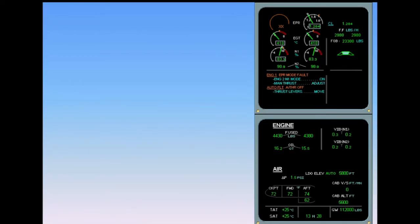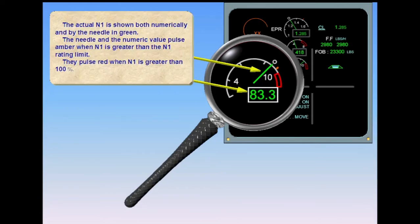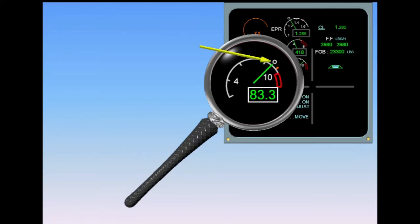The actual N1 is shown both numerically and by the needle in green. The needle and the numeric value pulse amber when N1 is greater than the N1 rating limit, and pulse red when N1 is greater than 100%. The white circle indicates the thrust lever position and is not displayed in unrated mode. The amber index indicates the full forward position of the thrust lever, MAX N1, which is also not displayed in unrated mode.